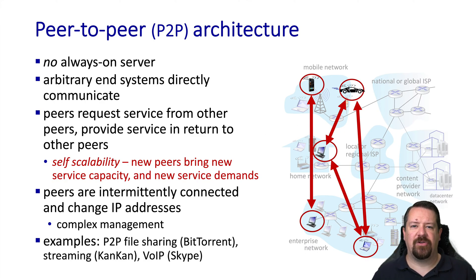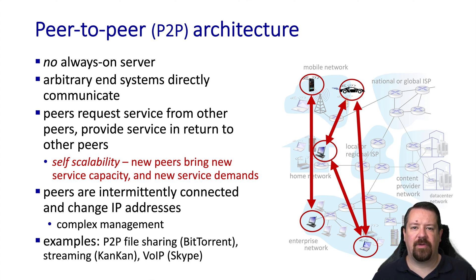The characteristic features of a peer-to-peer application is that they do not rely on an always-on server listening for connections. Instead, arbitrary end systems are able to communicate with each other directly. In this model, peers request service from other peers and provide service to other peers. It is important for the sustainability of the peer-to-peer network that the service provided scales at least as well as the service requested.